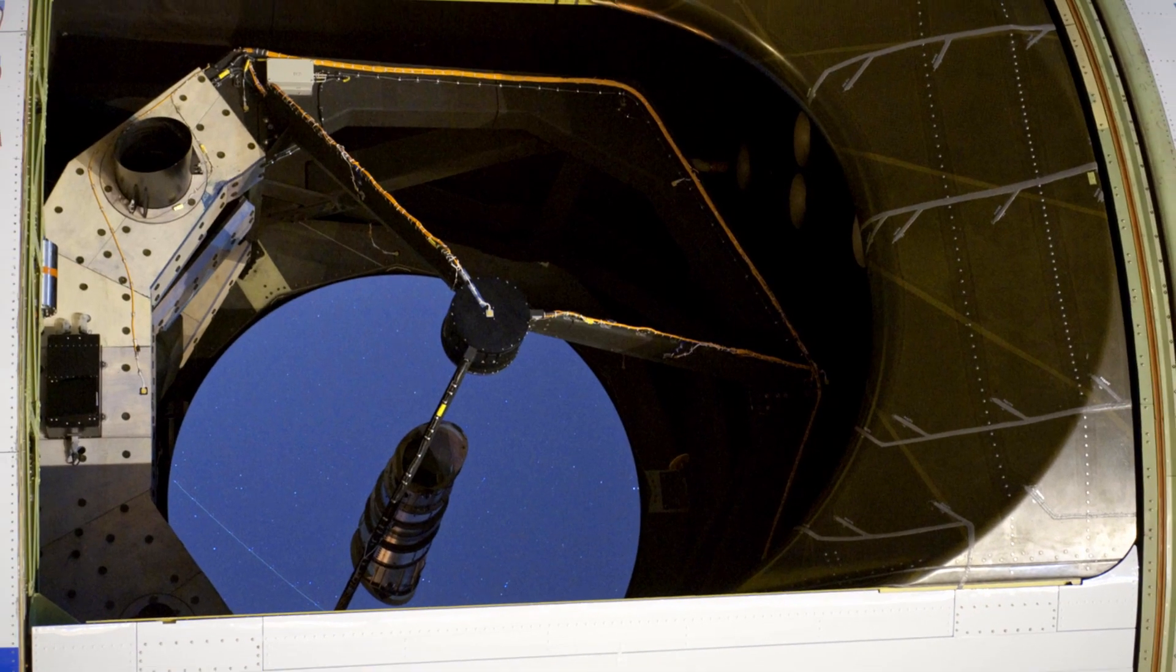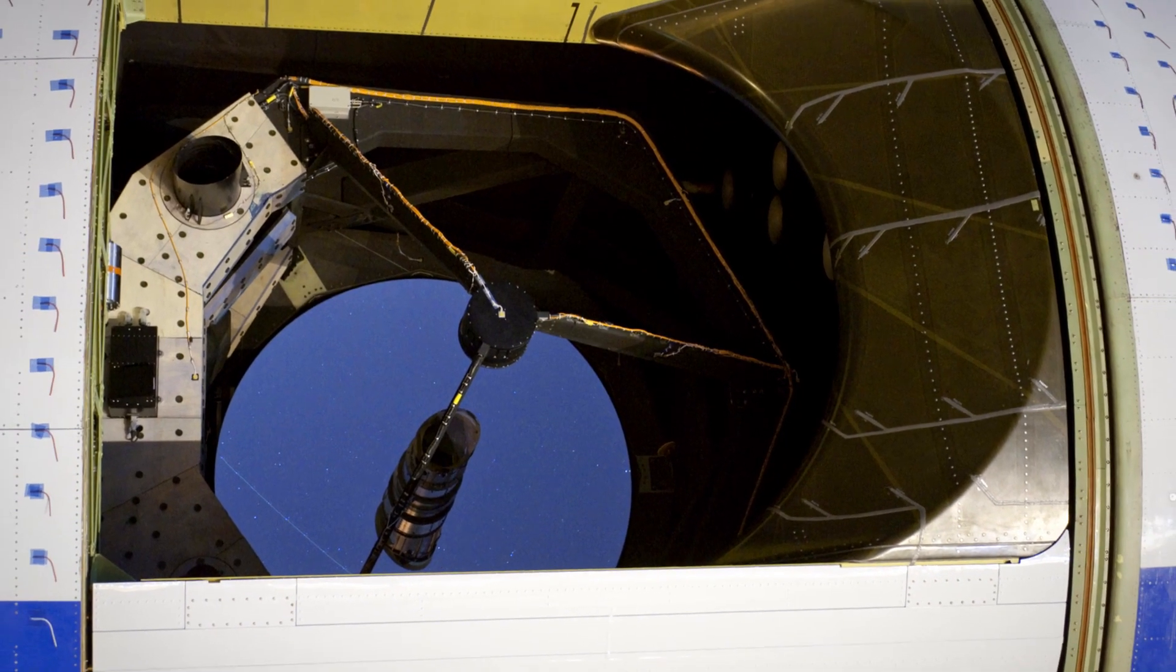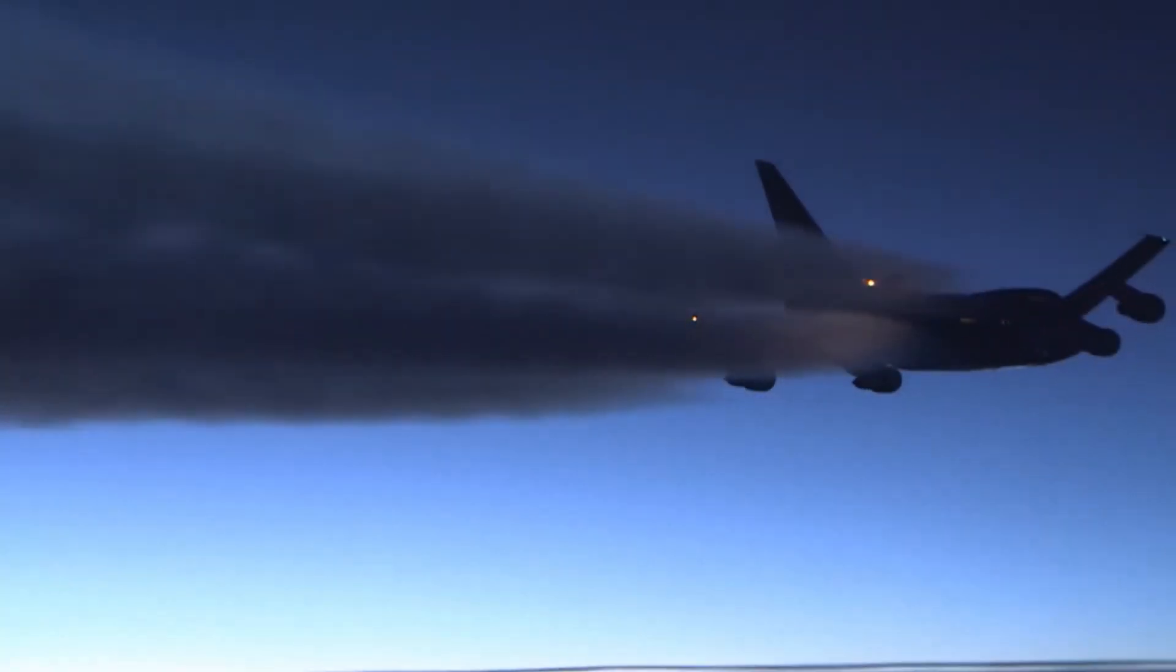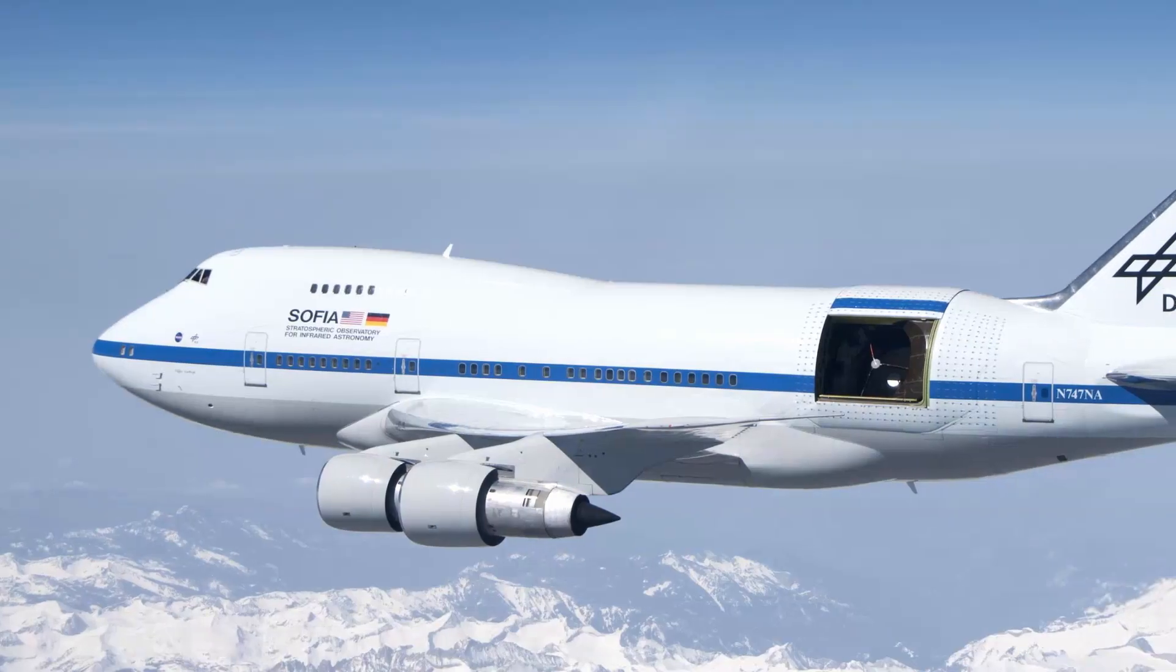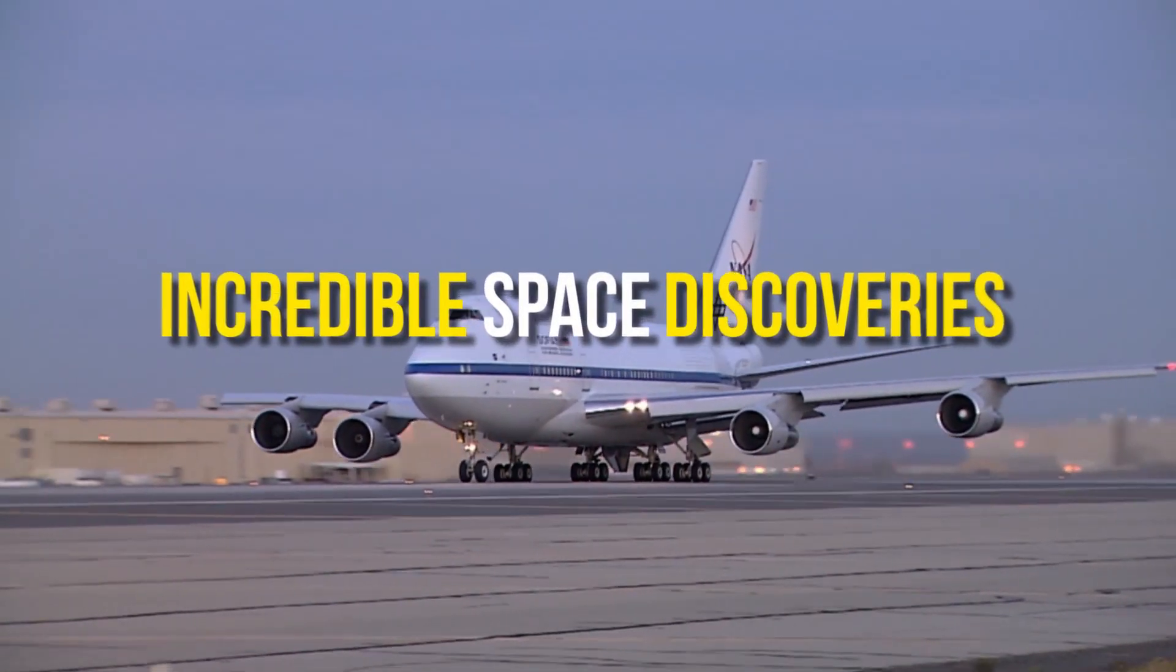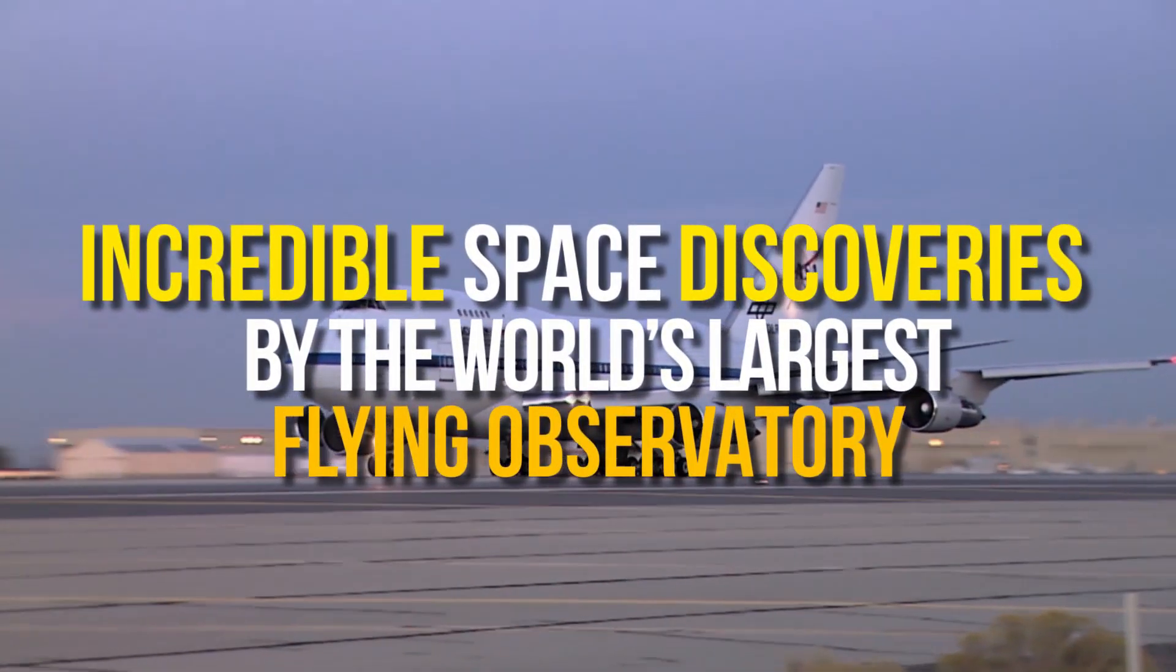SOFIA does just that by putting a telescope in the side of a modified Boeing 747 jet that flies at an altitude of around 40,000 feet. Join us as we look at some incredible space discoveries by the world's largest flying observatory.